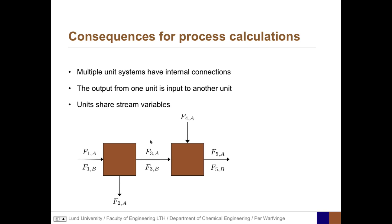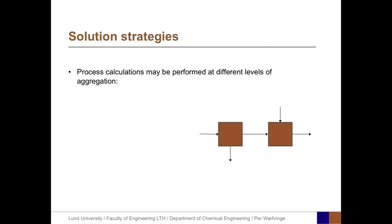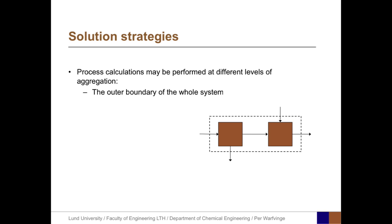In this case, the stream variables that are shared are F3A and F3B. Process calculations may be performed at different levels of aggregation. For example, one level is to look at the outer boundary of the whole system, which could be of interest if we are only interested in the inputs and outputs to the whole system and do not care about the internal flows within the system.